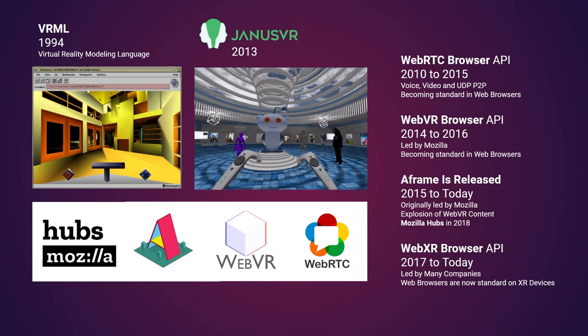This idea is nothing new. It started in 1994 with VRML, really trying to extend the web browser. Then Janus came along with WebRTC, which really enabled real-time immersive communication. Janus was an incredible project, really attempting to build the first version of the spatial web before the standards of WebVR and WebAR were there. Then WebVR came around in about 2014, led by Mozilla, to standardize virtual reality in the web browser. A-Frame came as the first major framework, which allowed us to build the first multiplayer worlds a few years later, like Mozilla Hubs.